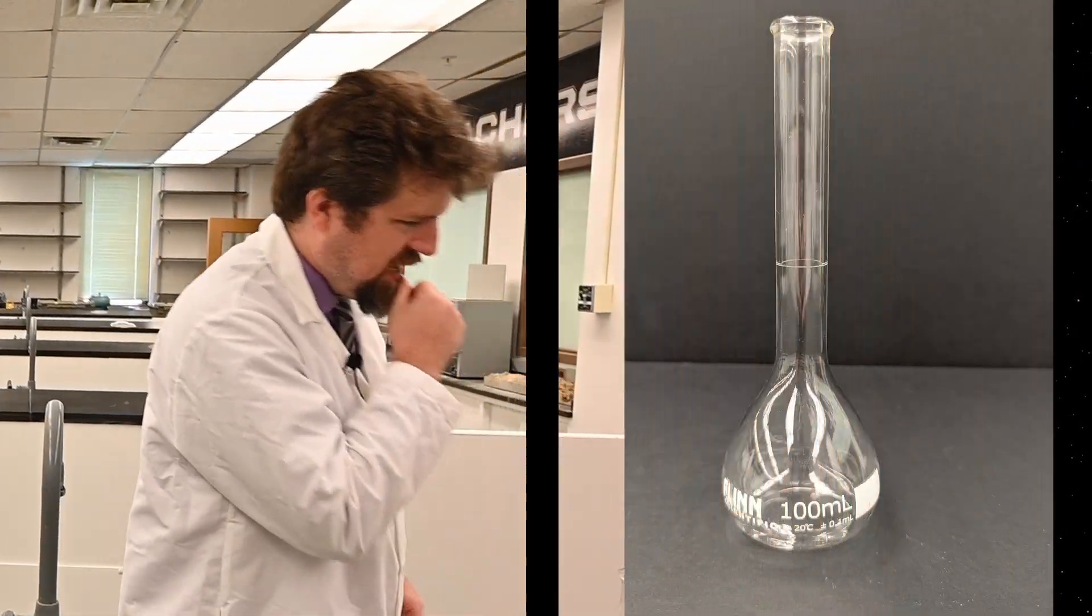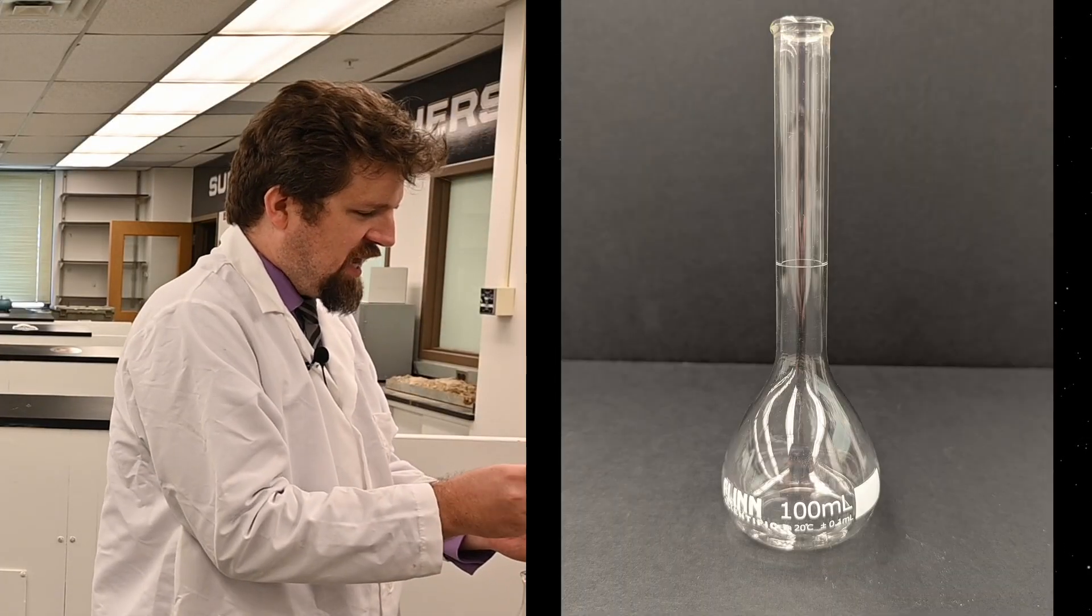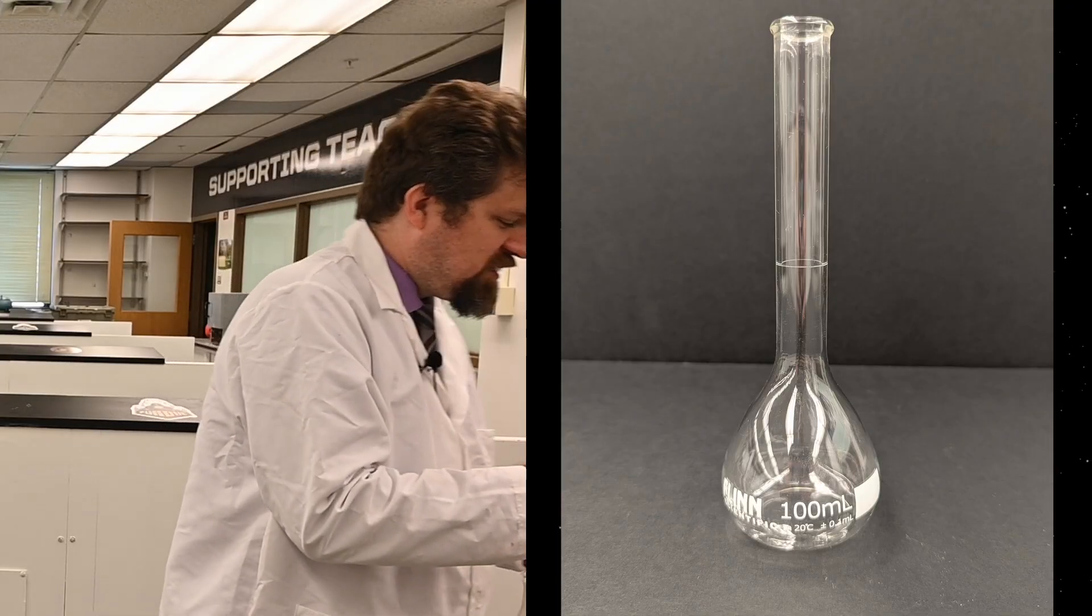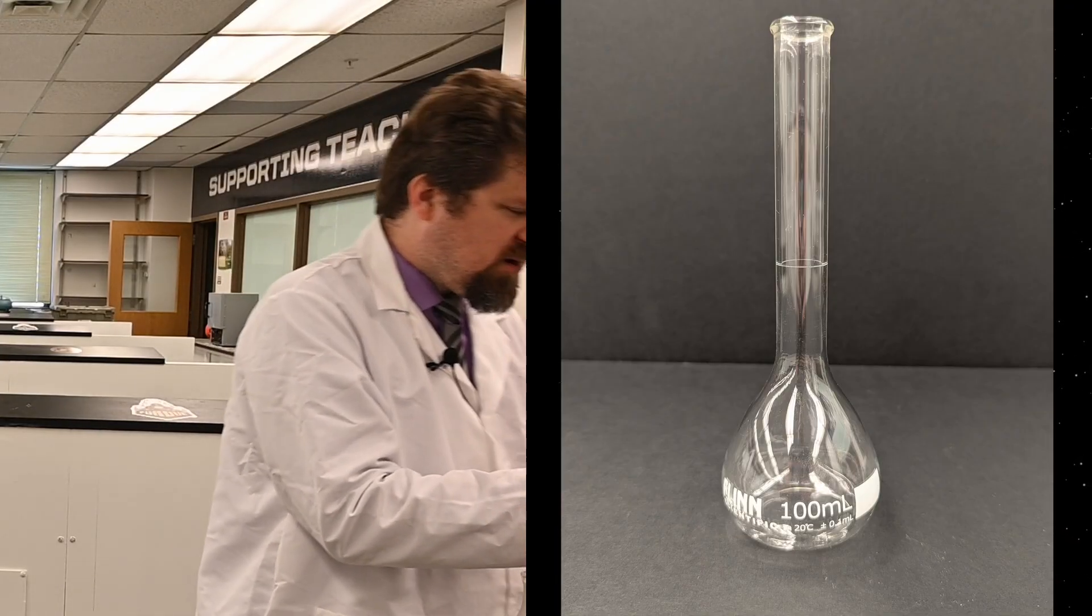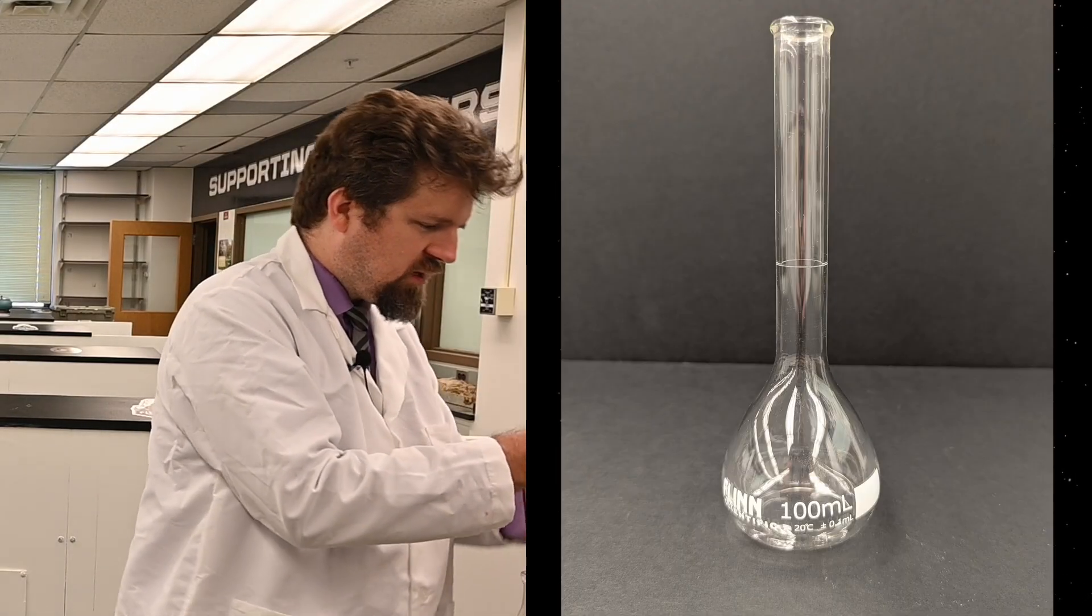Different types of flask. This is probably the second most common one you're going to see. This is called the volumetric flask, and it's weird in that you can notice that it has a much taller, skinnier top.